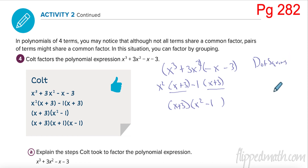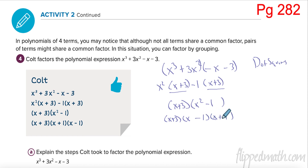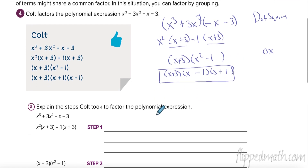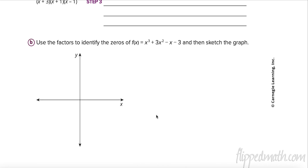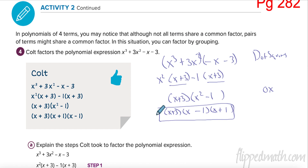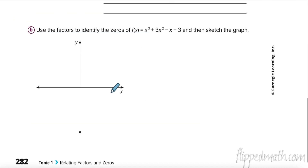Now x² - 1 is a difference of squares. Whenever you have two terms that are both perfect squares separated by subtraction, take the square root of each: (x + 1)(x - 1). So the full factored form is (x + 3)(x + 1)(x - 1). Our zeros are x = -3, x = 1, and x = -1. It's a cubic with positive leading coefficient so it starts low and goes high.